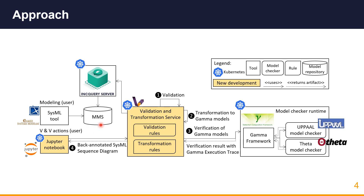In the Jupyter notebook, the user can select which model she wants to verify. After that, she can check the structural correctness of the models by running validation rules. The validation rules are run in the Validation and Transformation service, which receives the model from the Inquiry server and runs static checks to make sure the model is structurally correct, so that it can be used for model transformation.